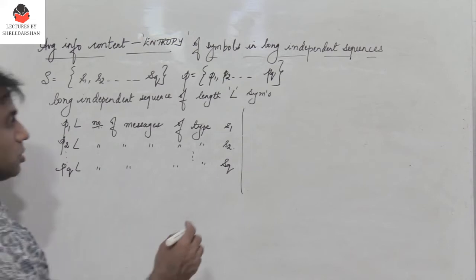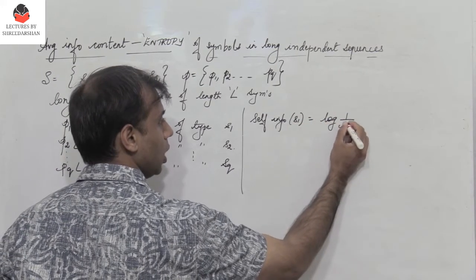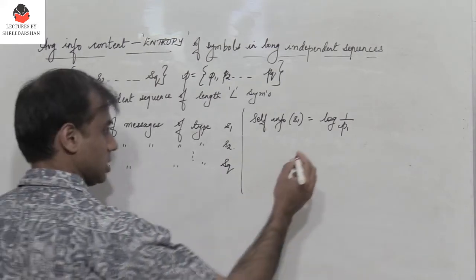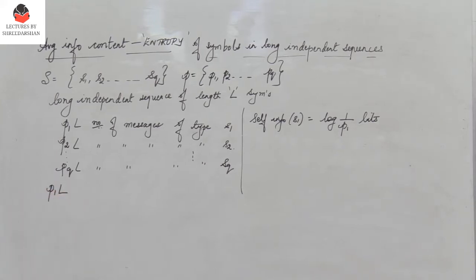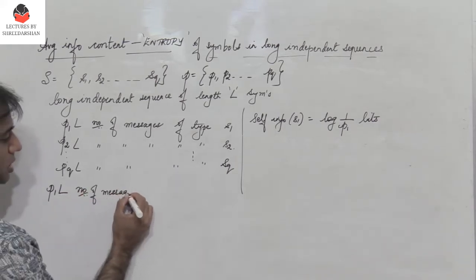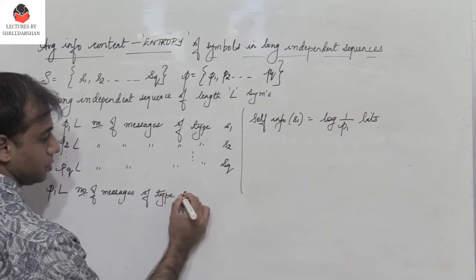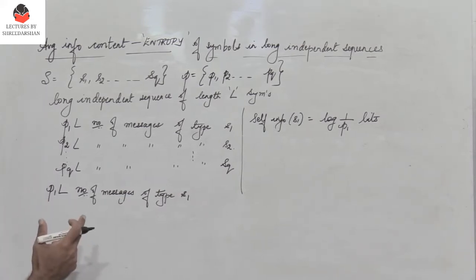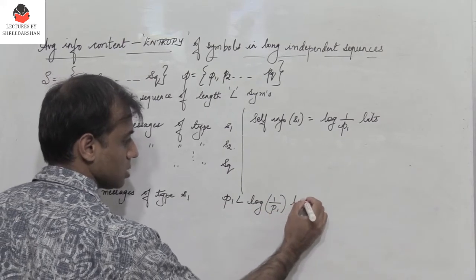The self-information of symbol S1 is log(1/P1) bits. So P1×L messages of type S1 contain P1·L·log(1/P1) bits of information in total.